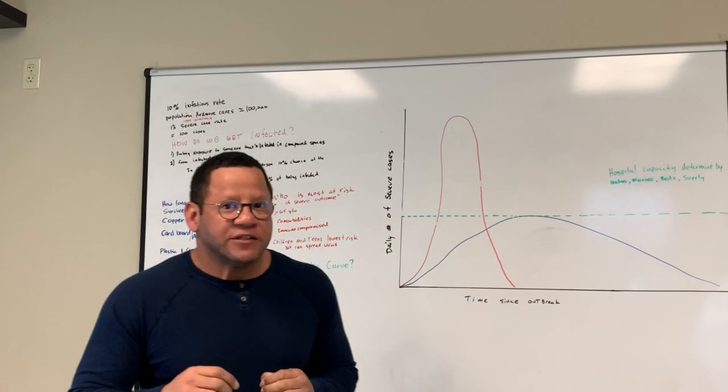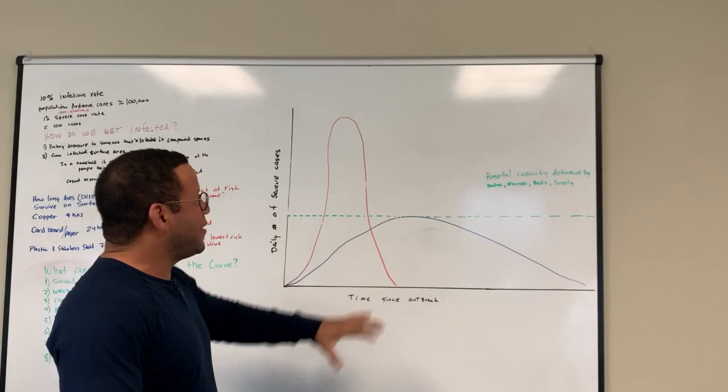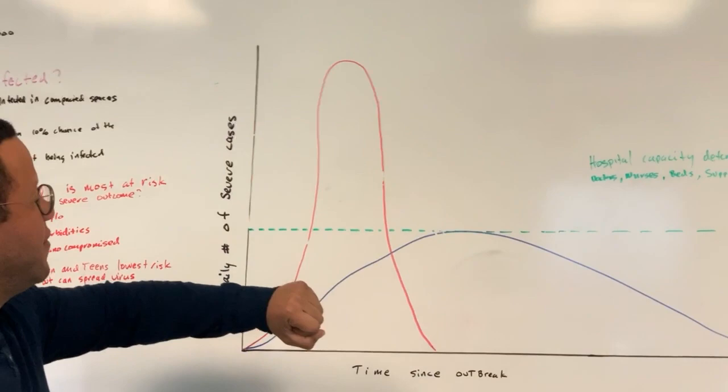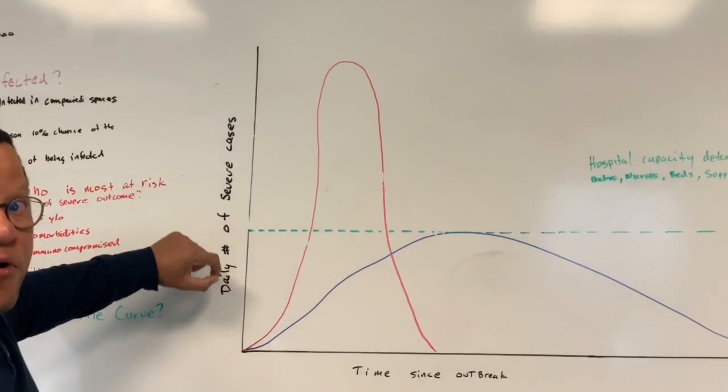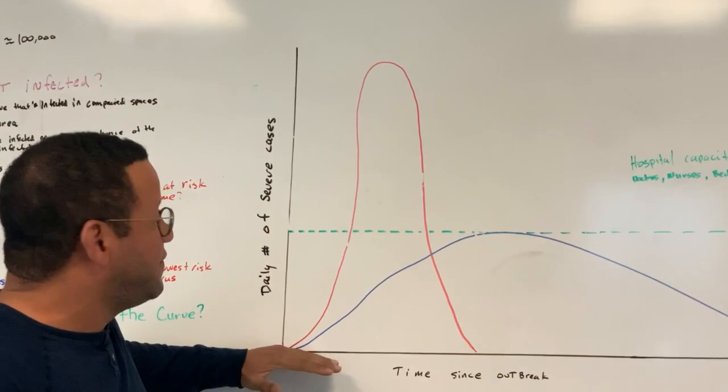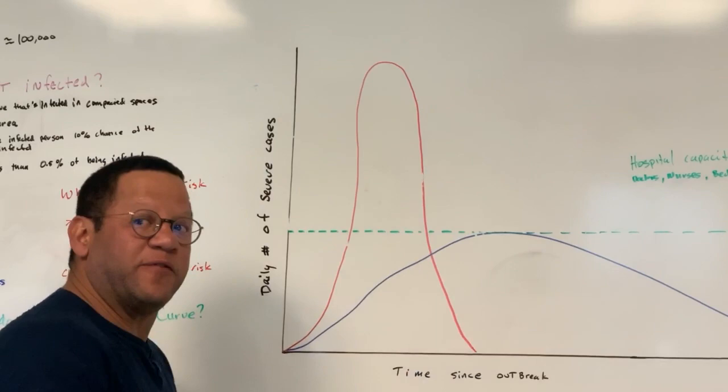So with that being said, so now we go back over here to everything that we have seen in the news, right? How do we flatten this curve or what is this curve about? So to give you a quick explanation of what this curve is, this axis is telling us the daily number of severe cases. This is the time since outbreak, the time from first infection.